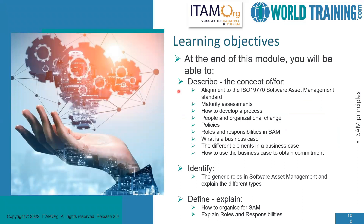The learning objectives in this section are the following: describing the alignment of the ISO 19770 SAM standard, maturity assessments, developing processes, people and organization changes, policies, roles and responsibilities in SAM, what is a business case, the different elements in a business case, how to use the business case to obtain commitment, and identifying the generic roles in SAM and explaining the different types. Finally, defining how to organize for SAM and explaining the roles and responsibilities.